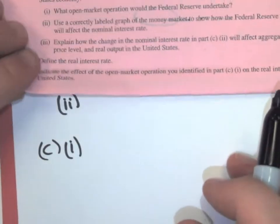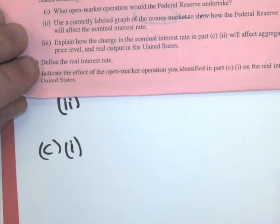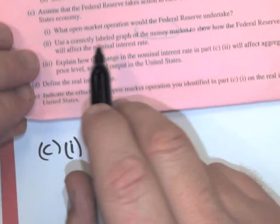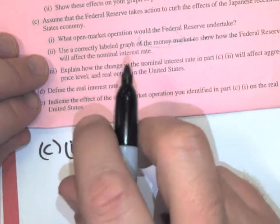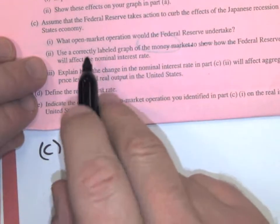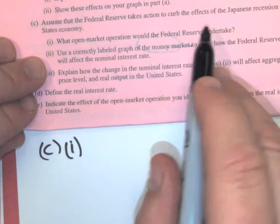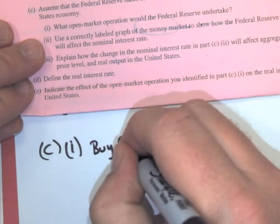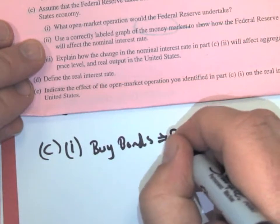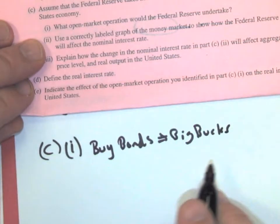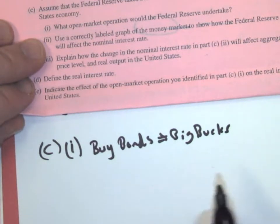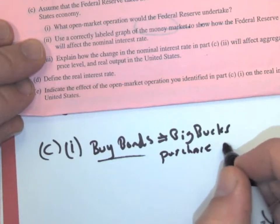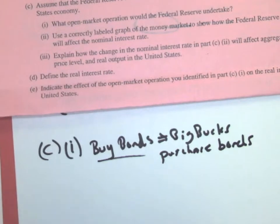So the tools are buy bonds, sell bonds, reserve ratio, discount rate, and Fed funds rate. But this one tells you exactly what open market operation would the Federal Reserve undertake. So open market operation means they want to buy bonds. That's right. Buy bonds equals big bucks. Now I'm writing that on there, you know, to help remind. That wouldn't be your actual answer. You could say buy bonds or purchase bonds is fine. Okay. So that's right.